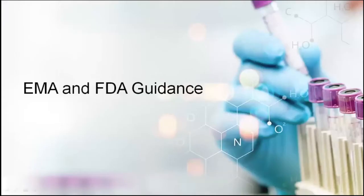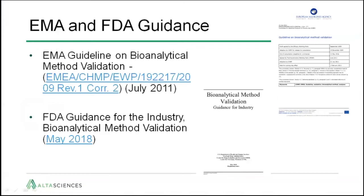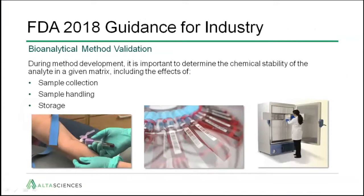In regards to EMA and FDA guidance, I'm referring to the EMA guideline on bioanalytical method validation which was released in July 2011, and the FDA guidance for the industry on bioanalytical method validation which was released in May 2018. The FDA 2018 guidance mentioned that method development has to determine the chemical stabilities of the analyte in a given matrix, including the effects of sample collection, sample handling, and sample storage.